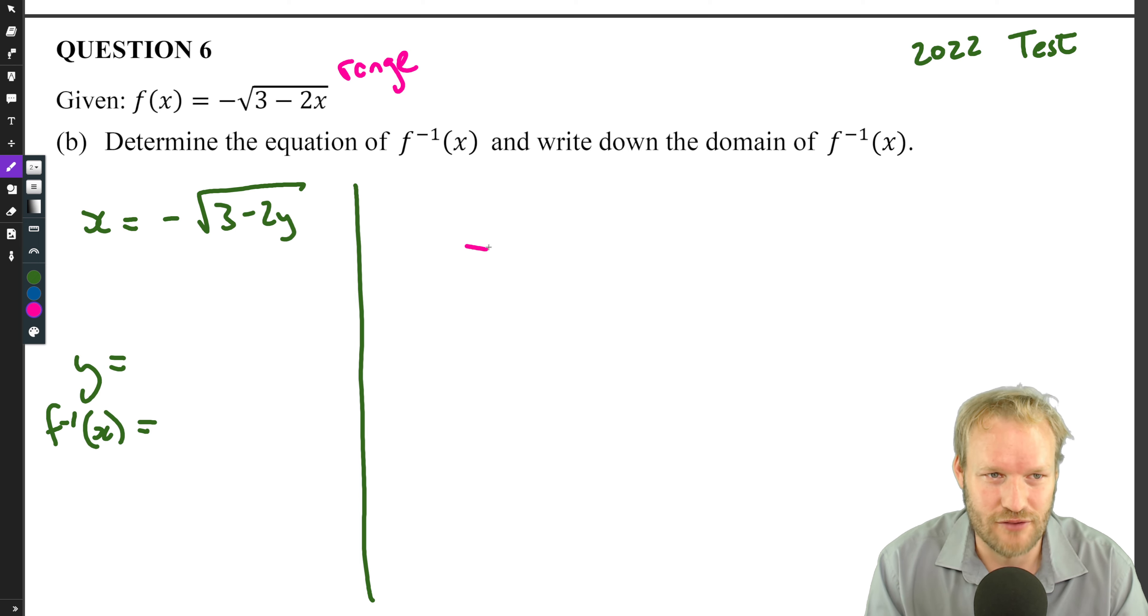So let's look at the range of the function that we're given: minus square root of three minus two x. Now if we're getting the square root of something, the square root of something must always be positive, right?